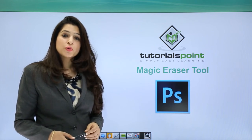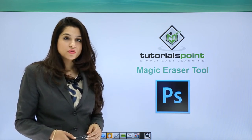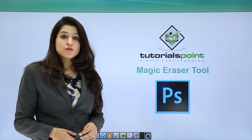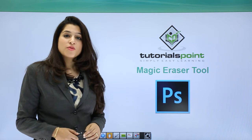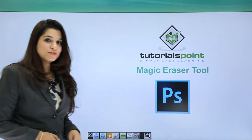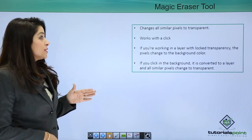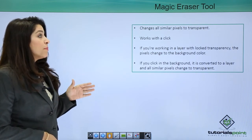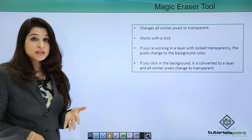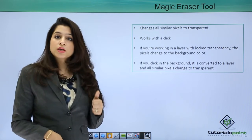In this tutorial we will learn about the magic eraser tool. This tool works like magic if you have similar color tones. The magic eraser tool basically changes all similar pixels to transparency — it removes similar pixels.